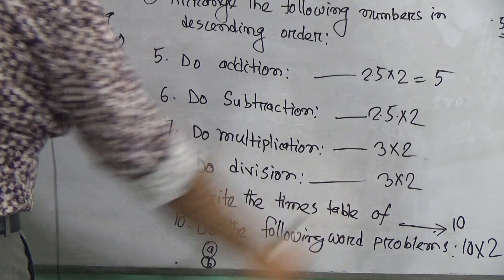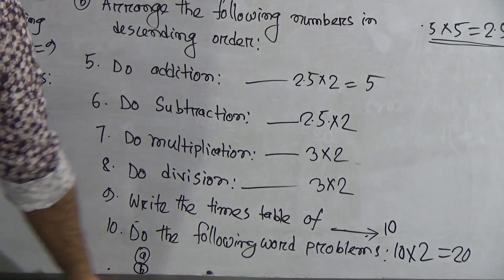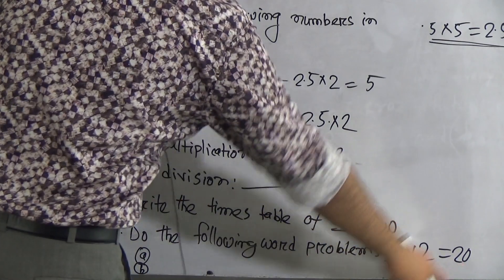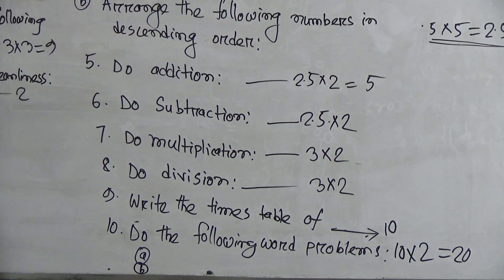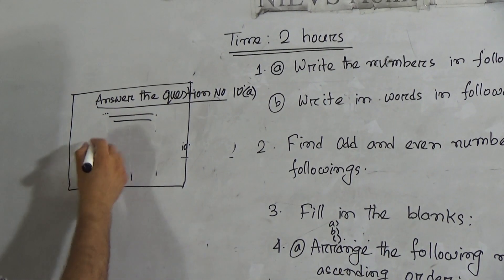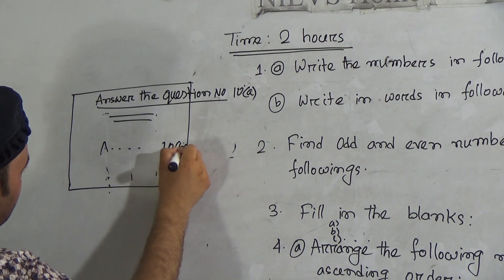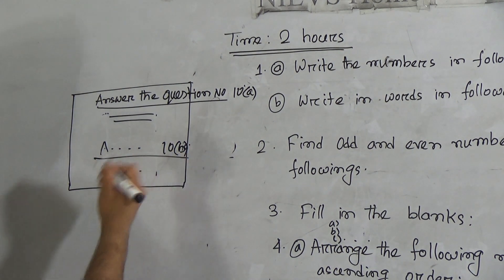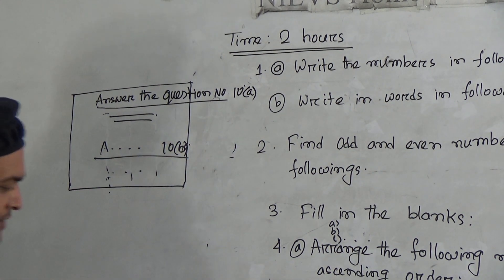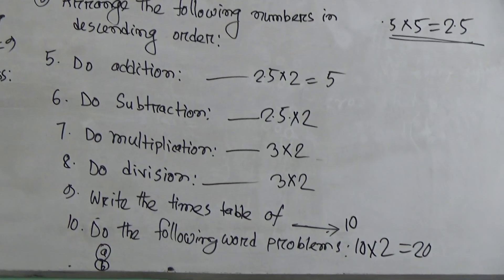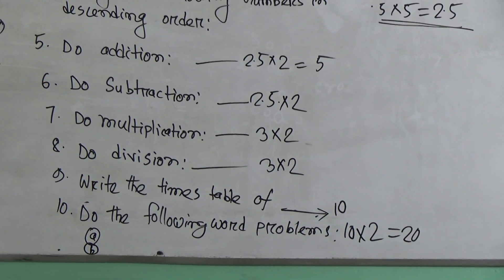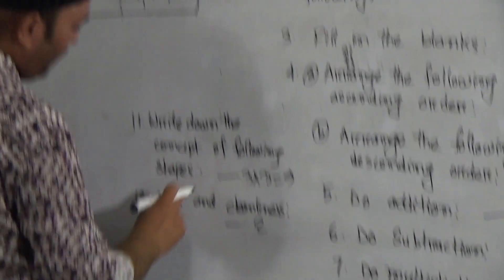Question number ten: do the following word problems. There are two word problems and they contain 20 marks. Write the answer to question 10A first, then write the answer to question 10B. This is how you will finish question number ten.